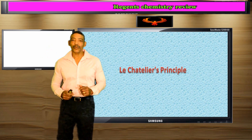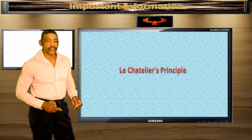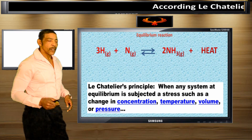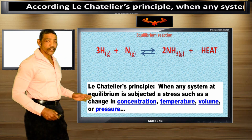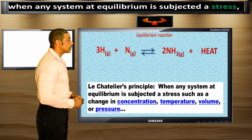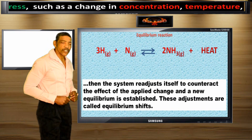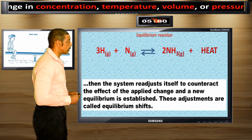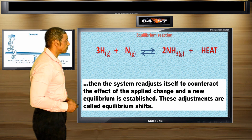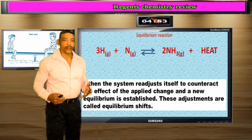Le Chatelier's principle explains how a system that is at equilibrium will adjust when a stress is applied. According to Le Chatelier's principle, when any system at equilibrium is subjected to a stress, such as a change in concentration, temperature, volume, or pressure, then the system readjusts itself to counteract the effect of the applied change and a new equilibrium is established. These adjustments are called equilibrium shifts.